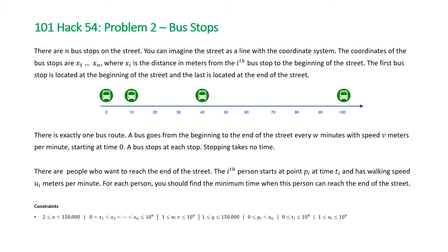There are people who want to reach the end of the street. The ith person starts at point pi at time ti and has a walking speed of ui meters per minute. For each person you should find the minimum time when this person can reach the end of the street.